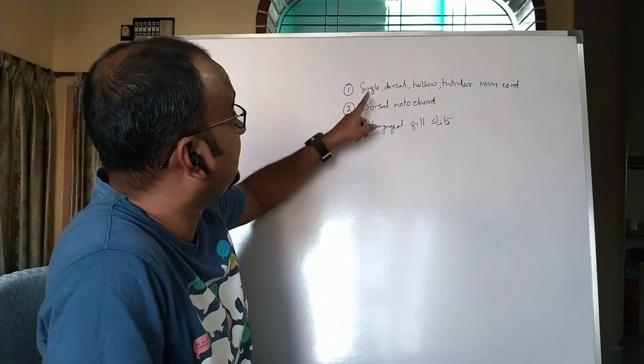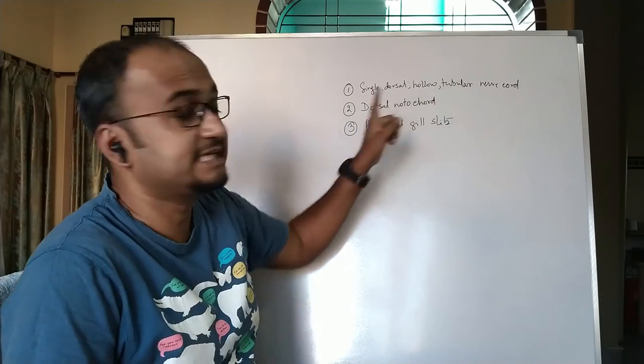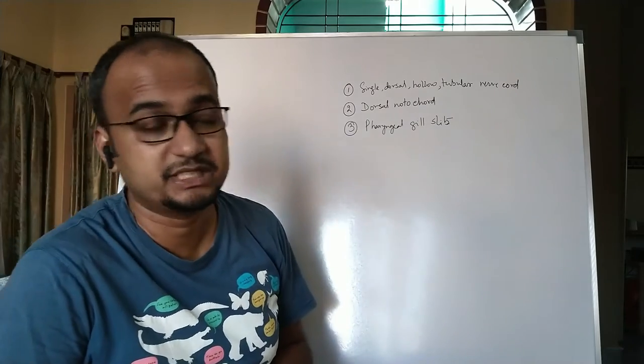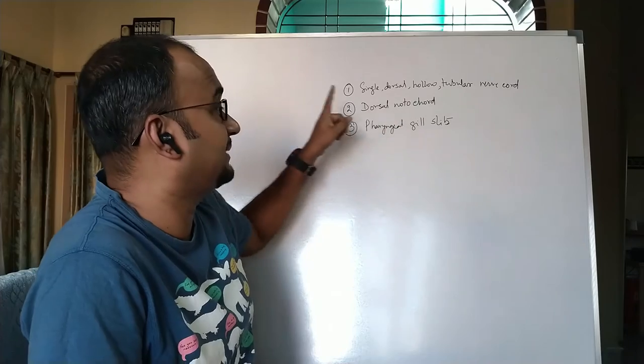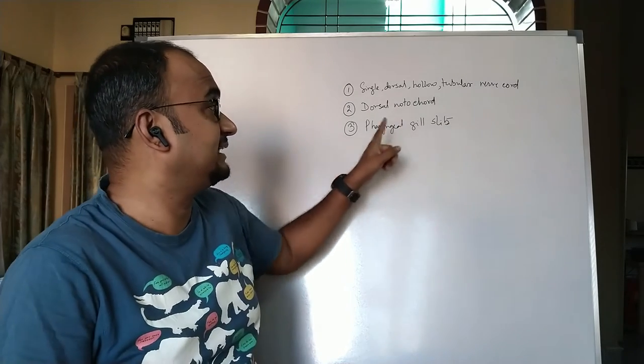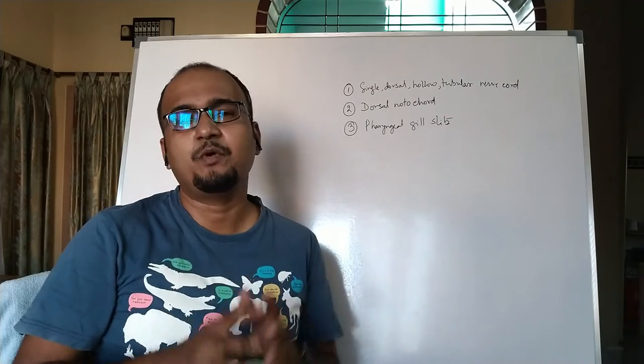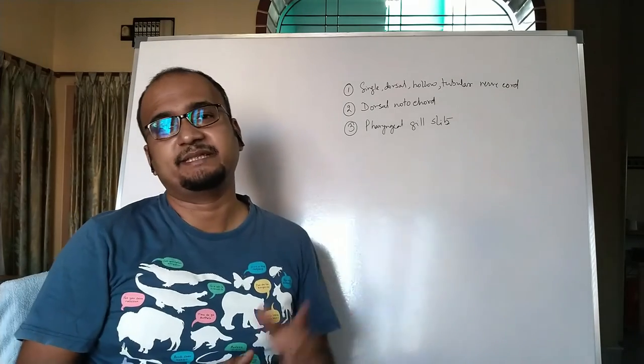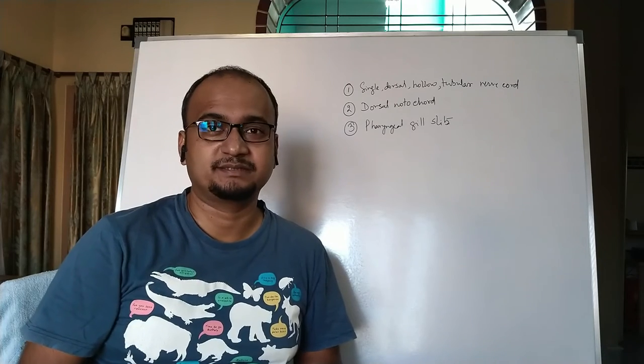The first character is the presence of single dorsal hollow tubular nerve cord. Each and every adjective is very important. Number two, presence of dorsal notochord, and number three, presence of pharyngeal gill slits in any point of their life. There are a few more characteristics, but these three are most important in phylum Chordata.